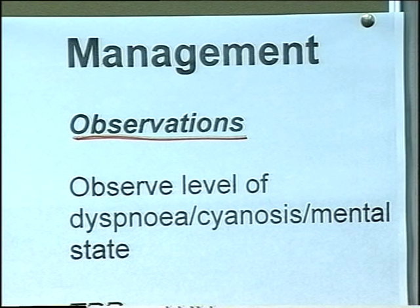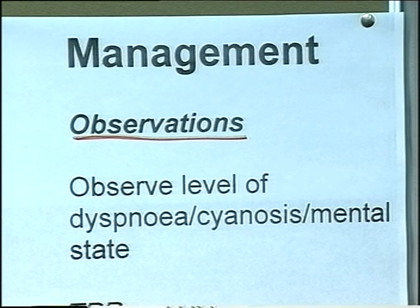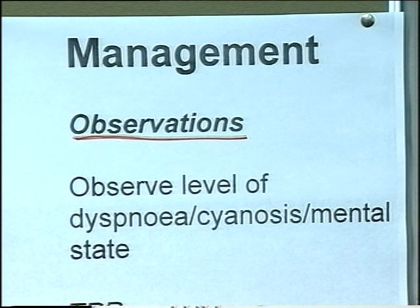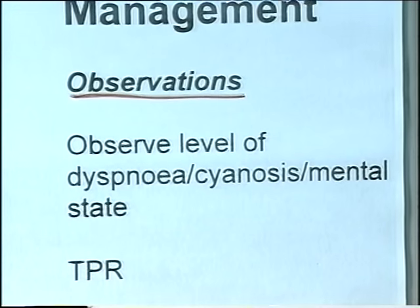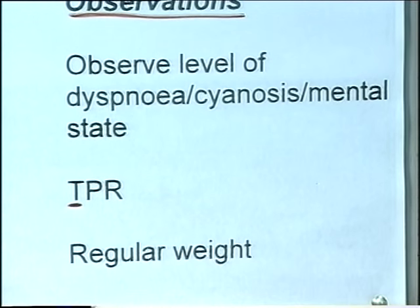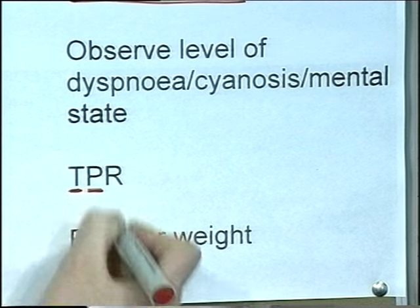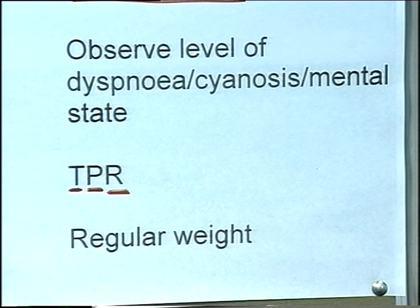We should observe for the level of cyanosis: is it peripheral or central? How bad is it? Is it getting worse or better? The mental state may be a guide to the level of hypoxaemia and cerebral hypoxia - if the patient is confused and disorientated, that is a very bad sign. Observe temperature as an indicator of acute infection, pulse, and respiratory rate - regular TPR observations as with any ill patient.